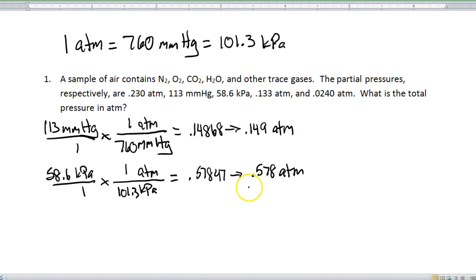So now that everything is successfully converted into atmospheres, it's just a simple matter of adding all of these numbers up, because it's asking for the total pressure. So the total pressure here is going to be equal to 0.230 plus 0.149 plus 0.578 plus 0.133 plus 0.0240.